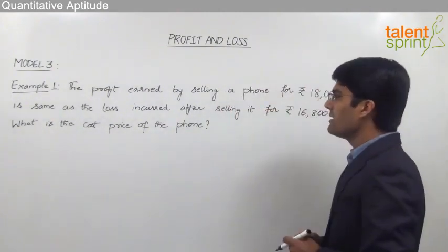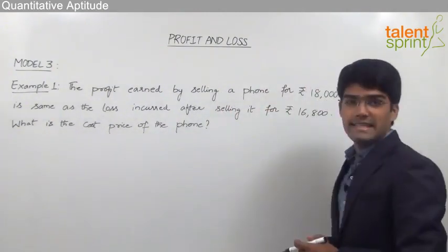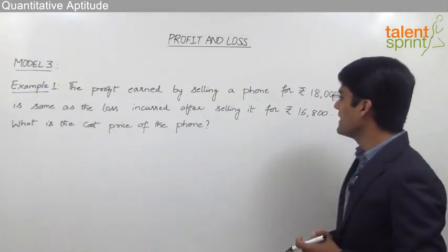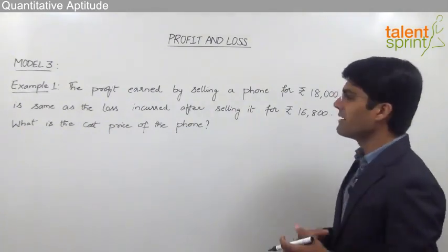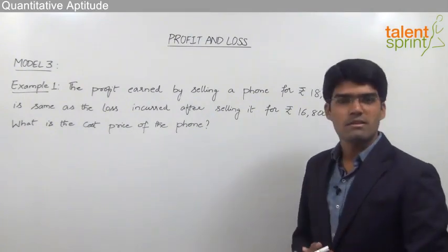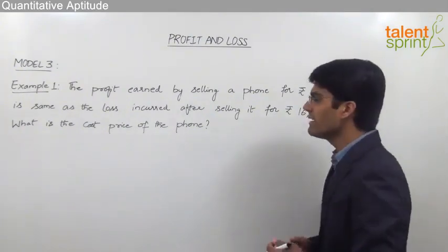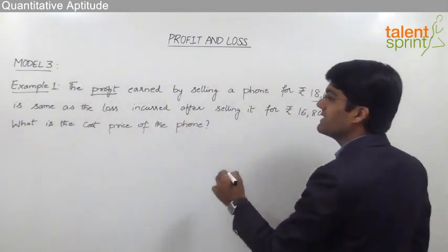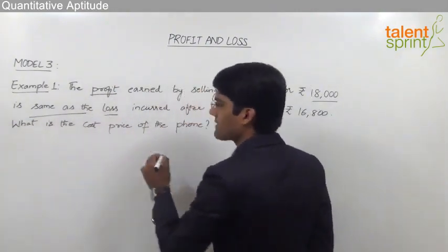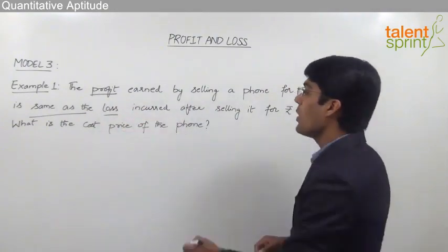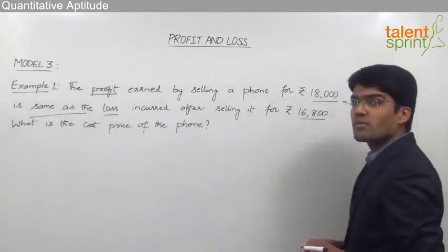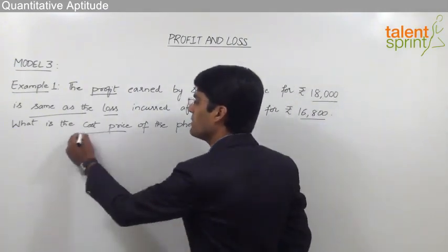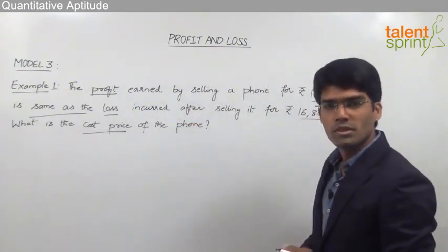The profit earned by selling a phone for Rs.18000 is the same as the loss incurred after selling it for Rs.16800. What is the cost price of the phone? The profit earned when it was sold for Rs.18000 is the same as the loss when it was sold for Rs.16800. From this data, we need to find out the cost price of the phone.